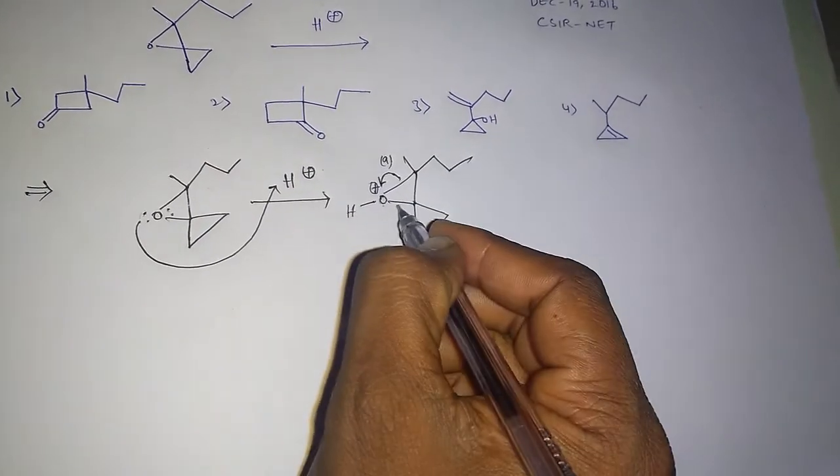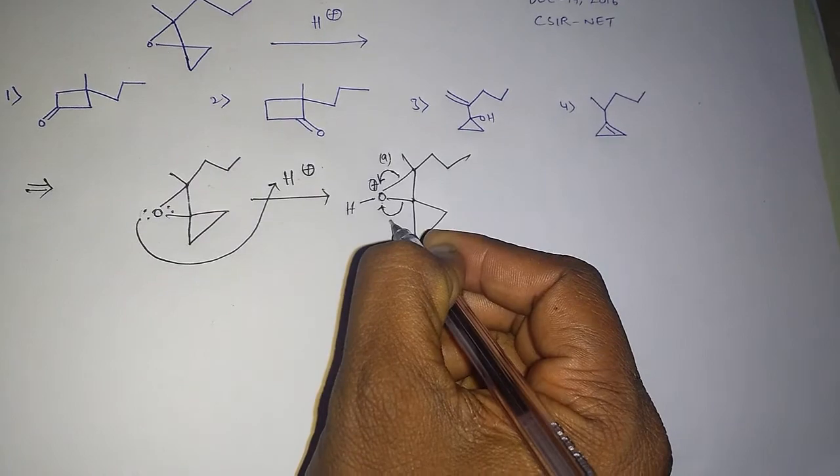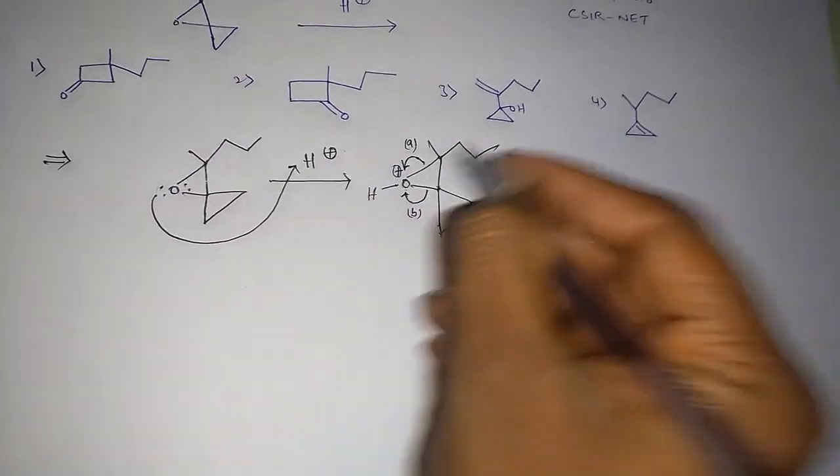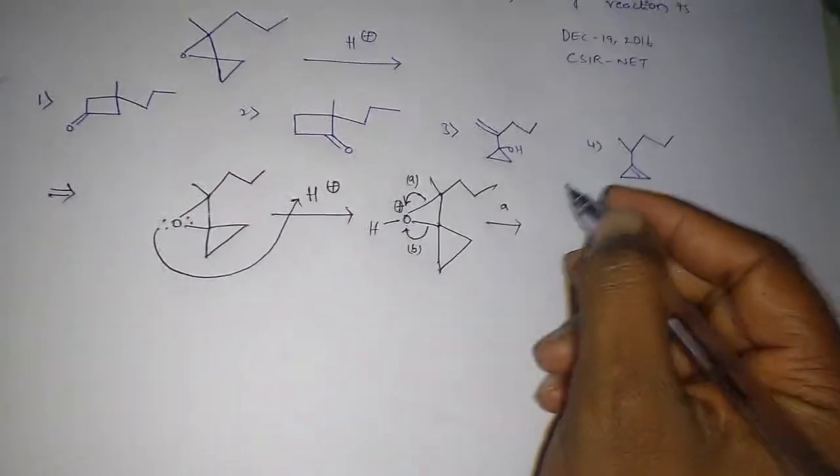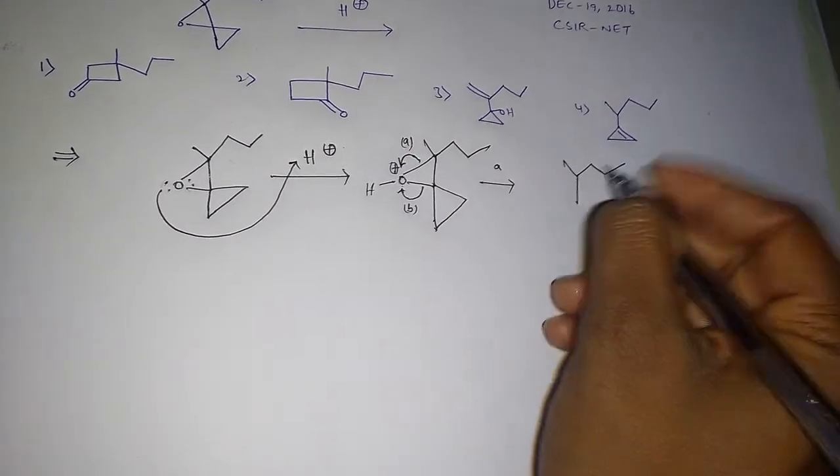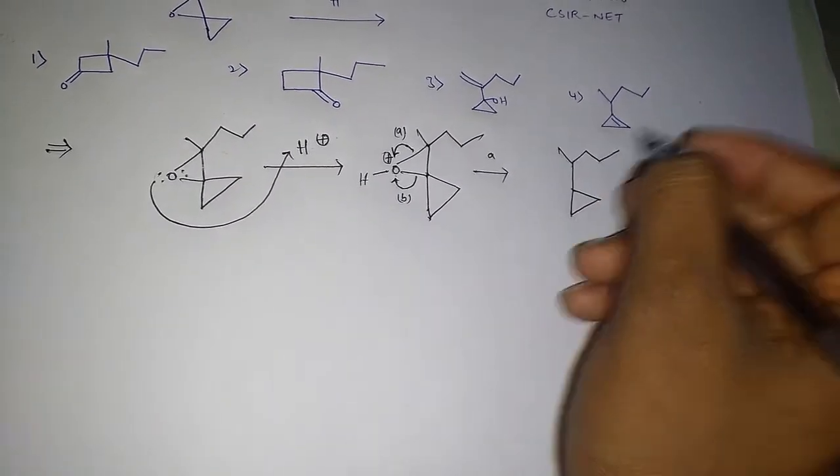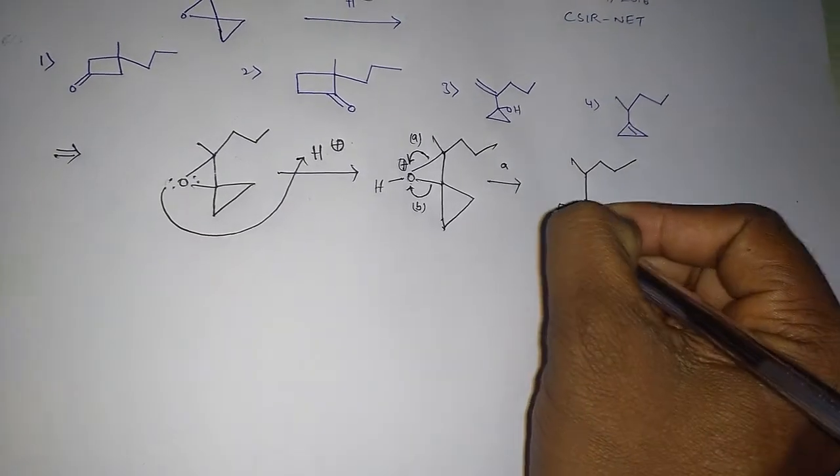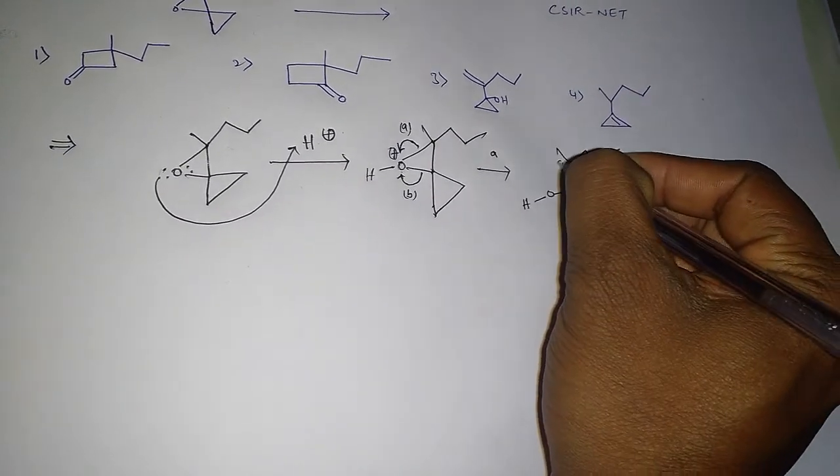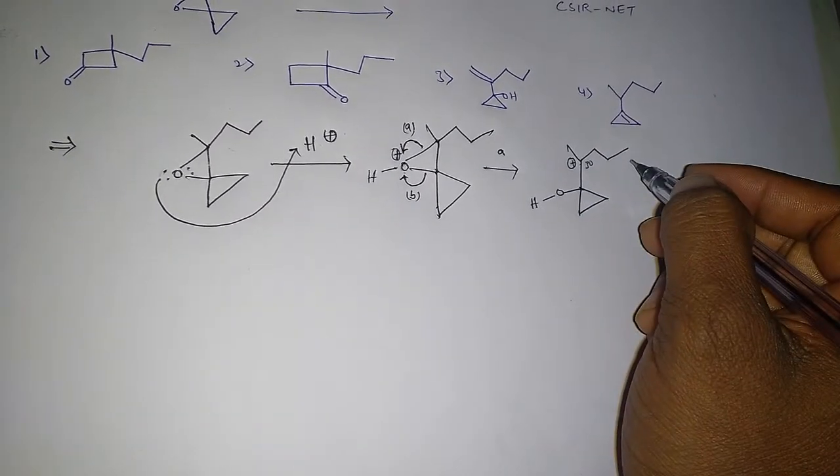So this is option A. Chances of A and B are also possible. And from this the bond ring here, so this is B. Now, I'm going through option A. What will happen? Here is a carbocation, so this is tertiary carbocation.